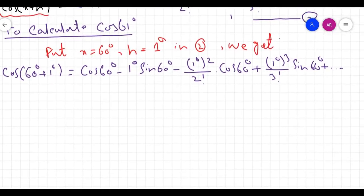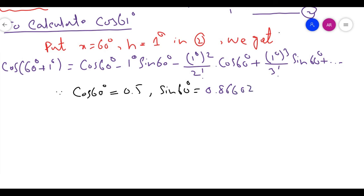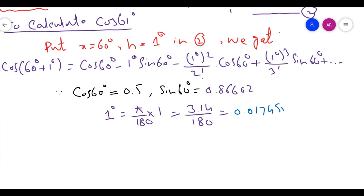Now we evaluate some known values. We know that cos(60 degrees) from calculator equals 0.5. Similarly, sin(60 degrees) from calculator equals 0.86602. Also, we convert 1 degree to radians by multiplying by pi over 180, which gives pi (approximately 3.14) divided by 180, equal to 0.01745 radians.